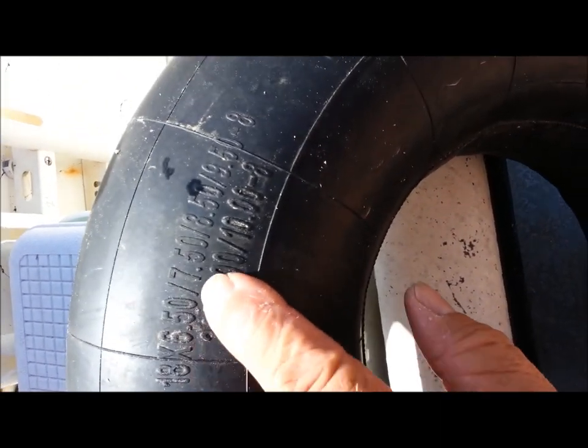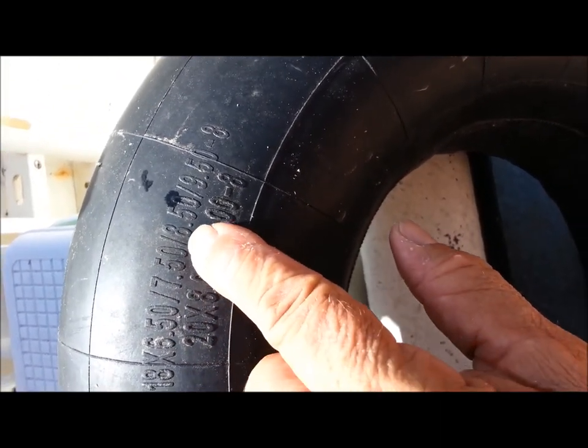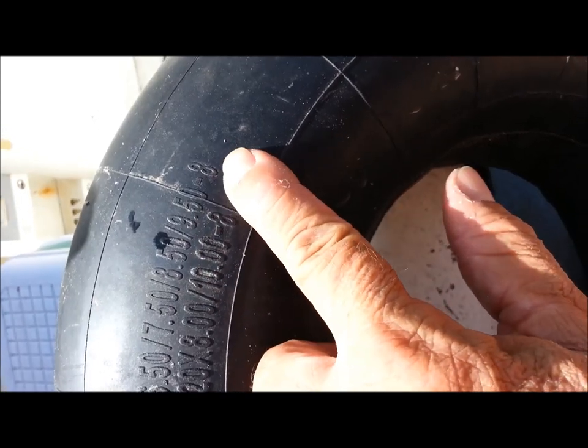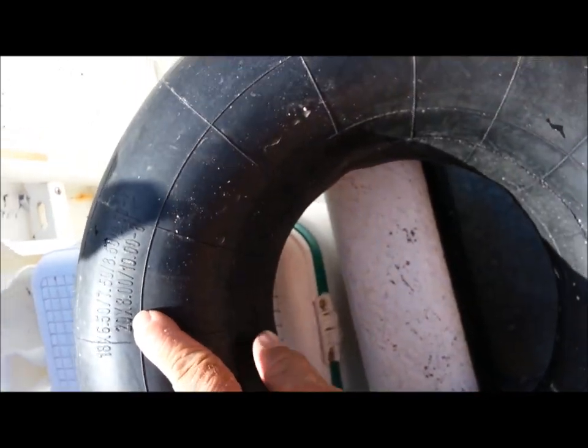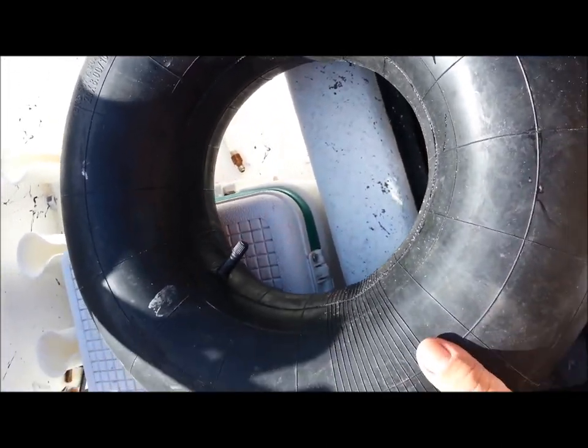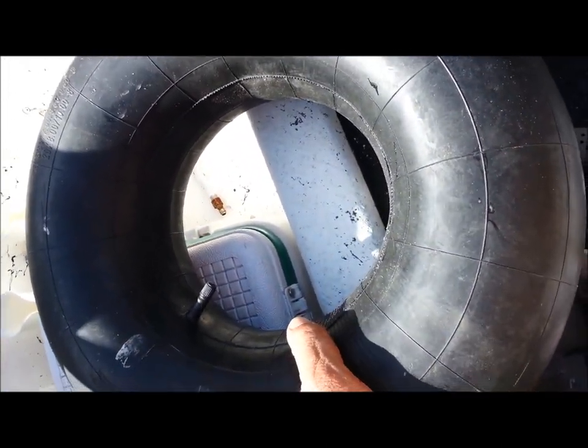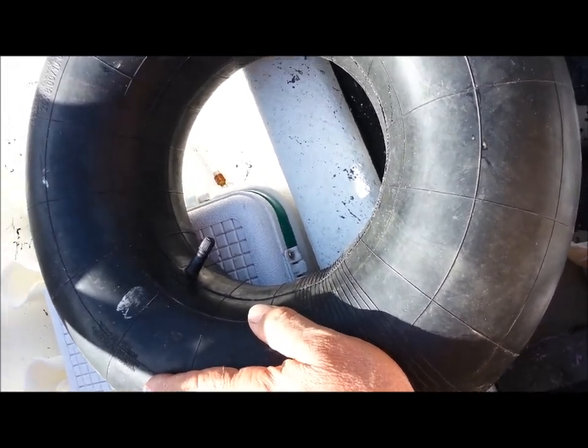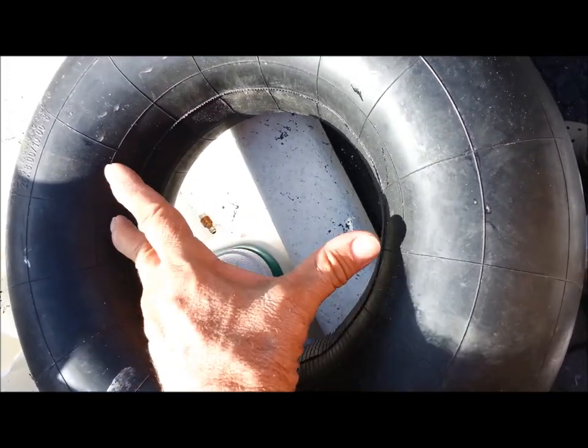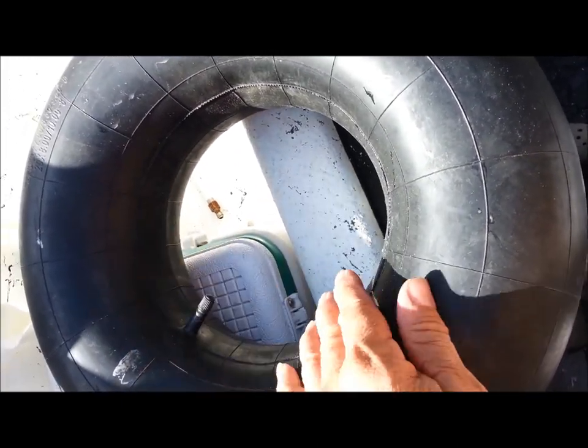They're 18 by 6.5 slash 7.5 slash 8.5 slash 9.5 dash 8. It's an 8 inch wheel, 20 by 8 slash 10. And I guess they fit numerous sized hubs or wheels. They're actually an 8 inch hub here. It's an 8 inch tire.